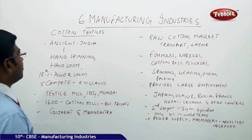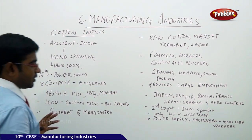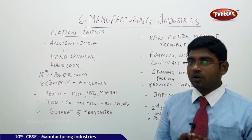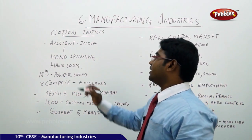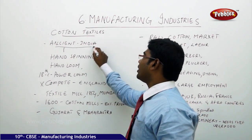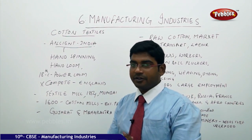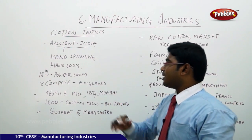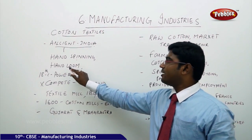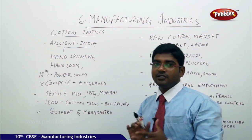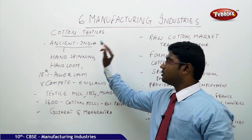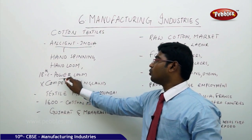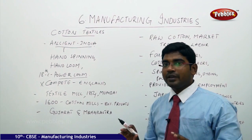Let us now learn about the cotton textile industry, how it was developed from prior to Indian independence to the modern day. In the ancient period, India had good quality cotton available. As time passed, hand spinning mills got replaced with hand loom mills, but after the 18th century, hand spinning and hand loom mills began to be dominated by the power loom.